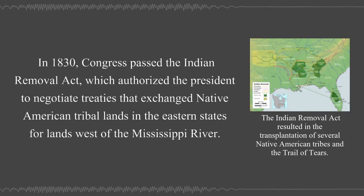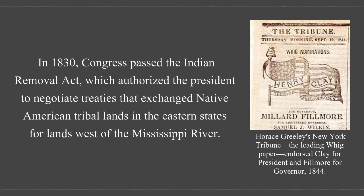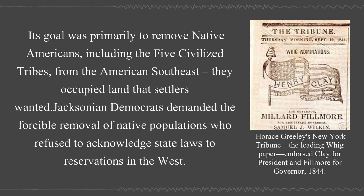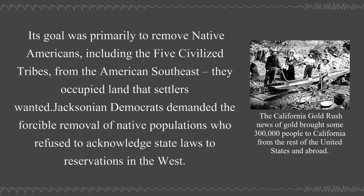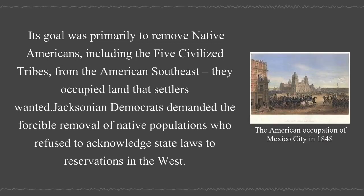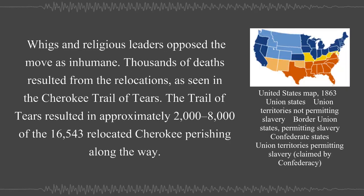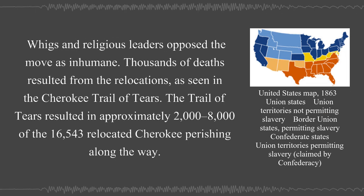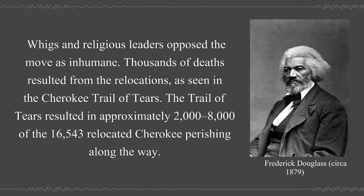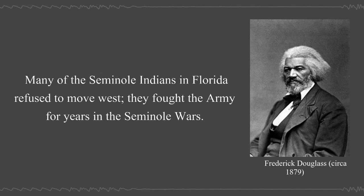In 1830, Congress passed the Indian Removal Act, which authorized the President to negotiate treaties that exchange Native American tribal lands in the eastern states for lands west of the Mississippi River. Its goal was primarily to remove Native Americans, including the five civilized tribes, from the American southeast—they occupied land that settlers wanted. Jacksonian Democrats demanded the forcible removal of Native populations who refused to acknowledge state laws to reservations in the west. Whigs and religious leaders opposed the move as inhumane. Thousands of deaths resulted from the relocations, as seen in the Cherokee Trail of Tears, which resulted in approximately 2,000 of the 16,543 relocated Cherokee perishing along the way. Many of the Seminole Indians in Florida refused to move west and fought the army for years in the Seminole Wars.